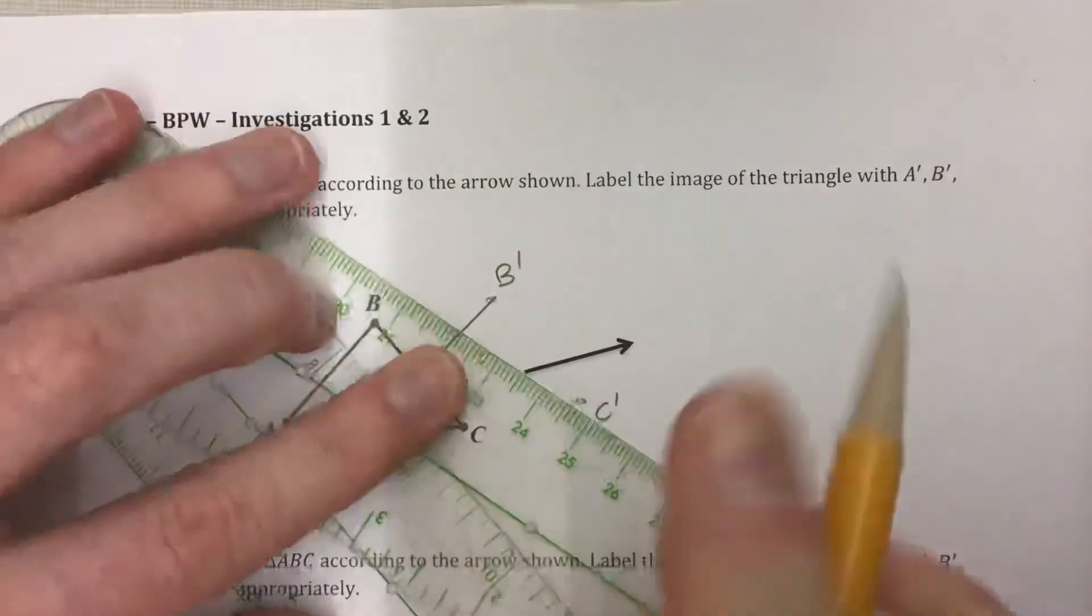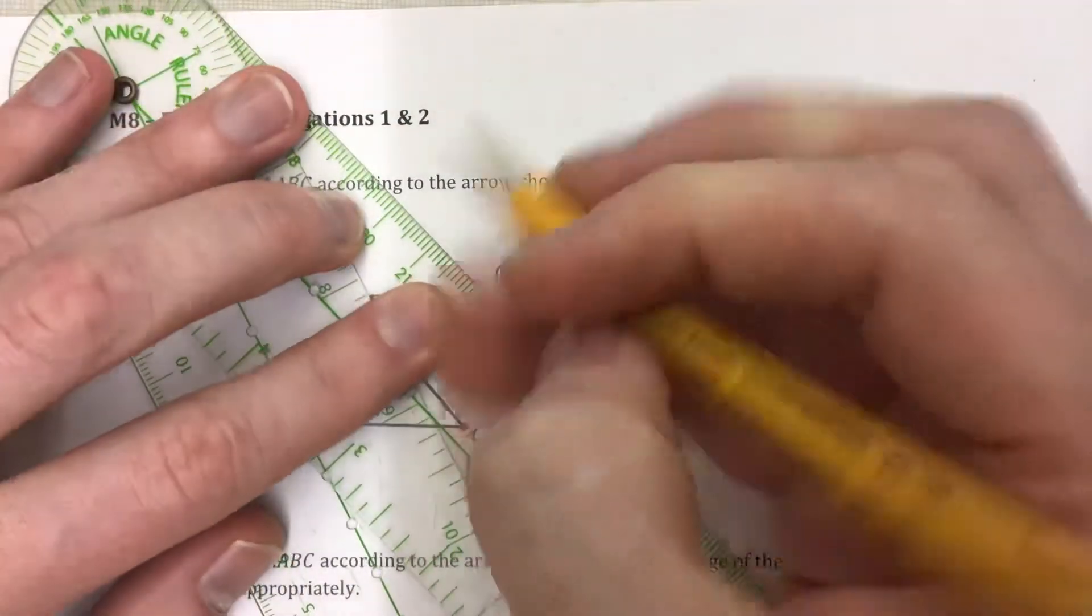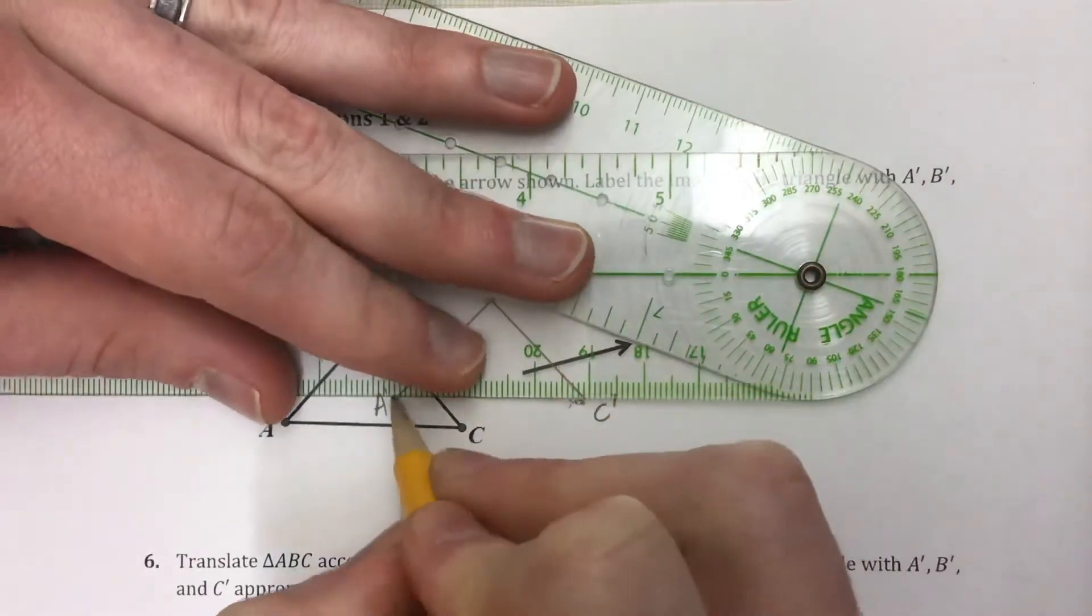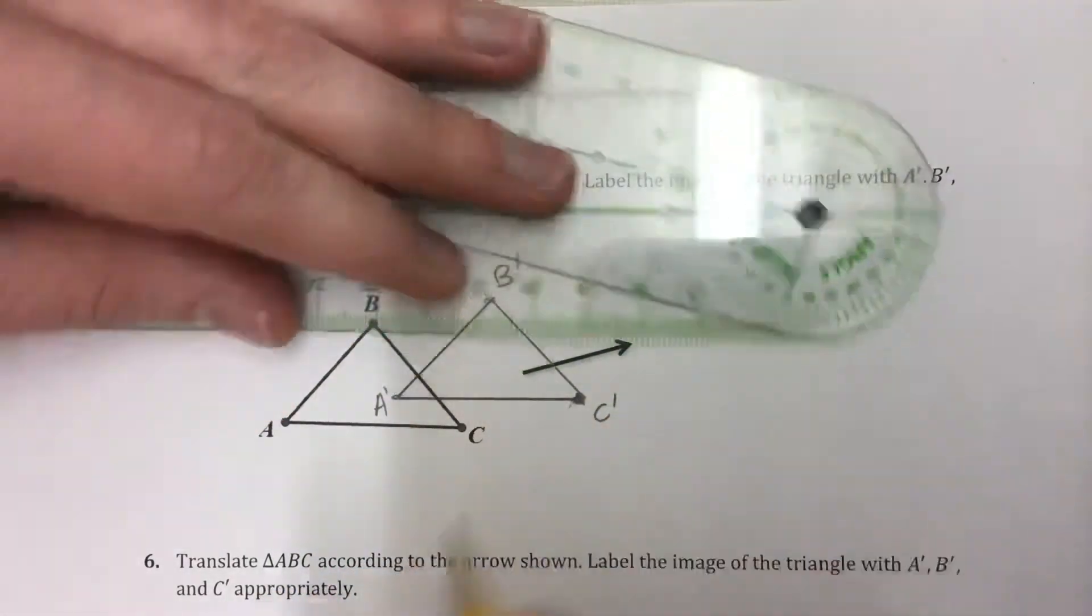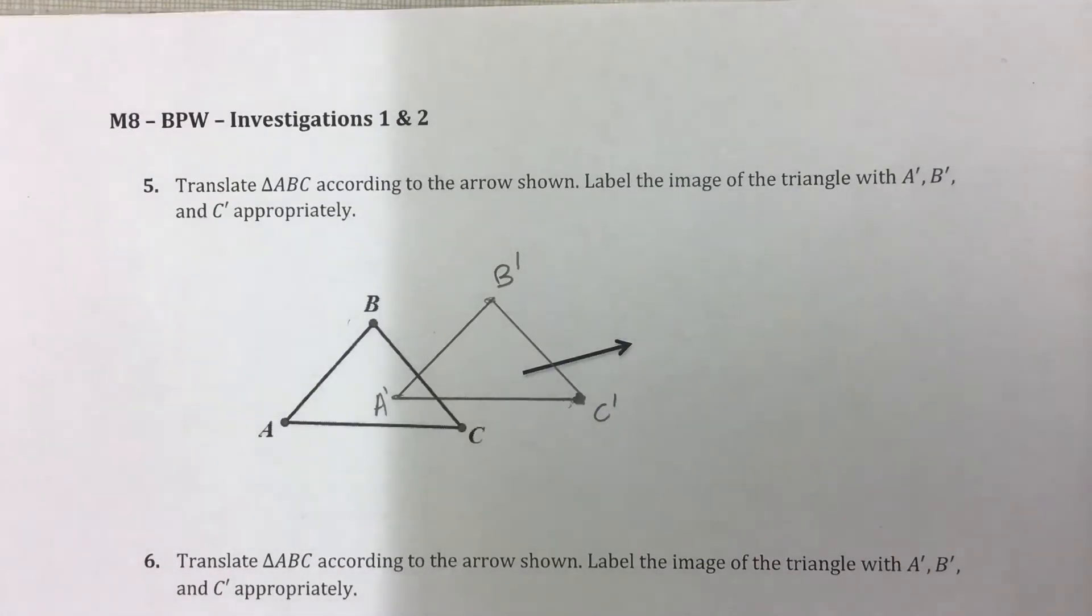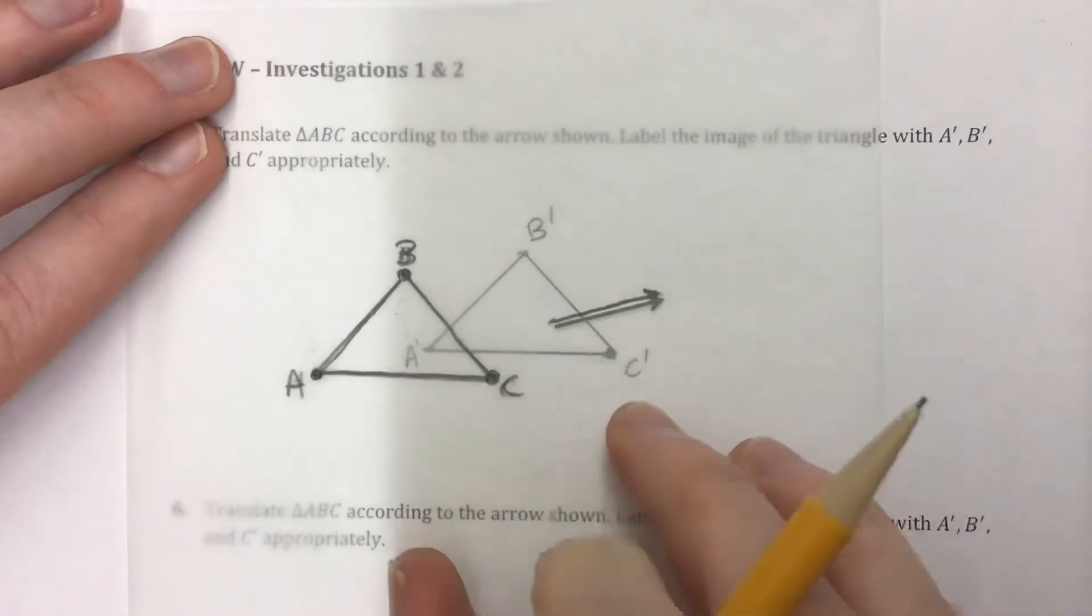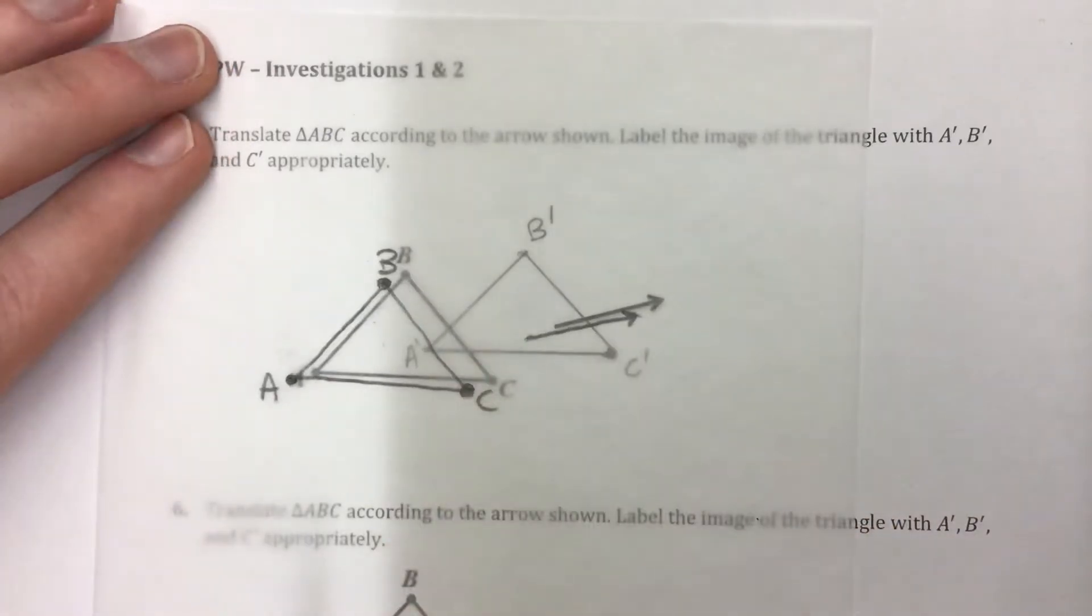It's always good to use a ruler to keep it as accurate as possible. That's a little off. Looks pretty good. You do not need to trace the arrow as well. That just shows the direction and the distance you're going. You don't need to draw that as your new picture, just the new shape.